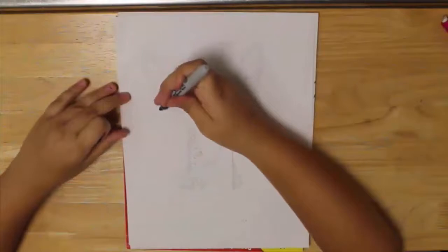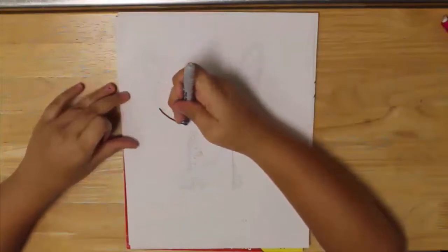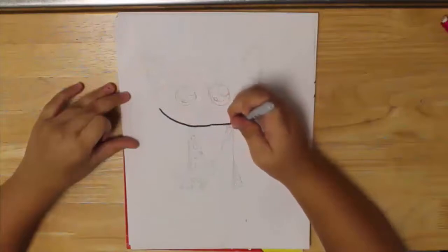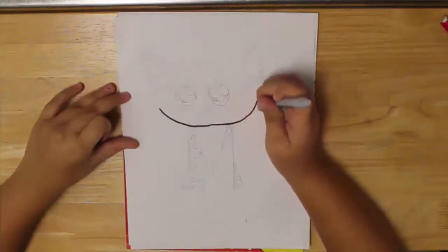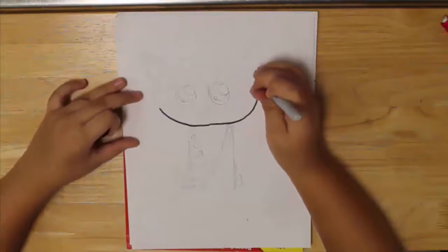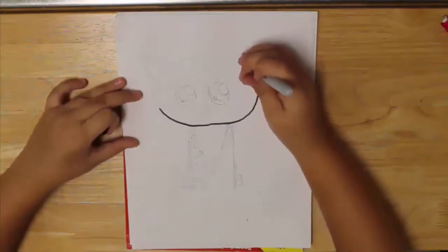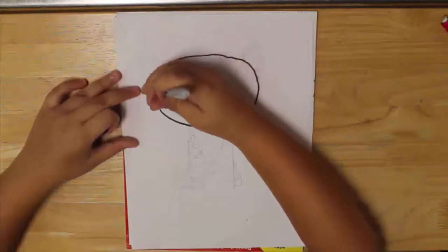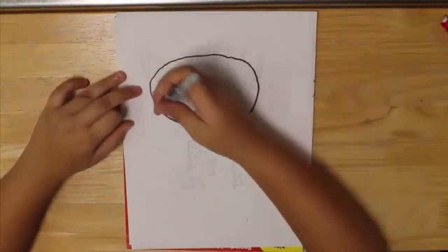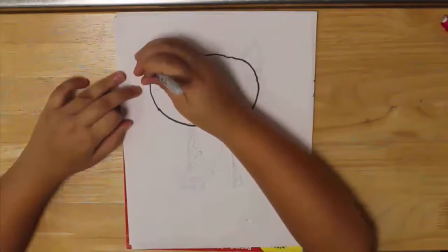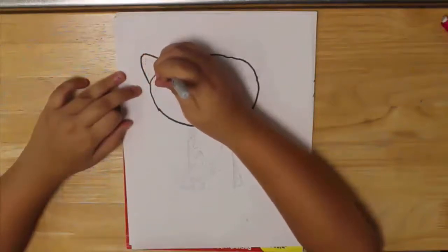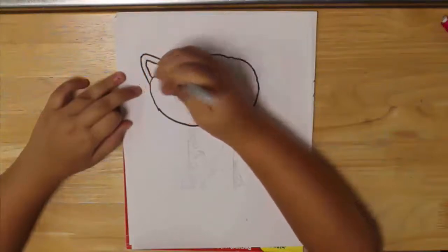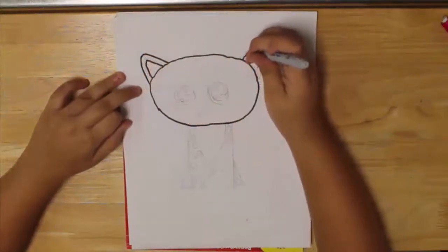We're going to start out by drawing our head, so draw an oval. Next, draw her ears which are like two rounded triangles and then another one of those on the inside. Now just do the same thing on the other side.